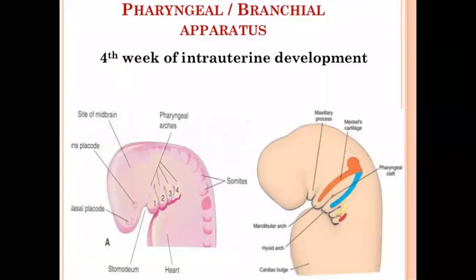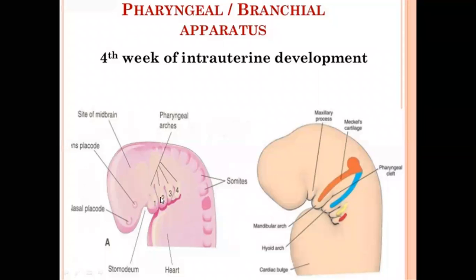In the lateral view of the gut as well as the embryo during the fourth week of intrauterine life, you can make out a depression. There is a bulging of the forebrain on the cranial side and a bulging of the heart below. Between the bulging of the forebrain above and the bulging of the heart below, there is a depression. This depressed area is known as the stomatodium, which is the future mouth of the embryo.